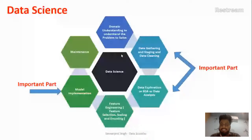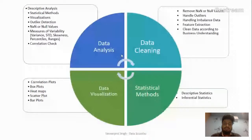After model implementation we have the maintenance phase, where we keep training our model with new data so that it becomes more and more robust in production. So those are the most important parts of implementing a data science project to make the best out of your data. The first major part is data analysis.